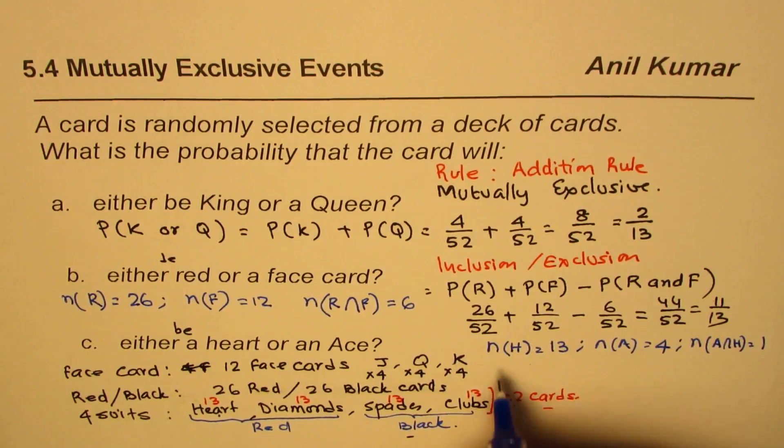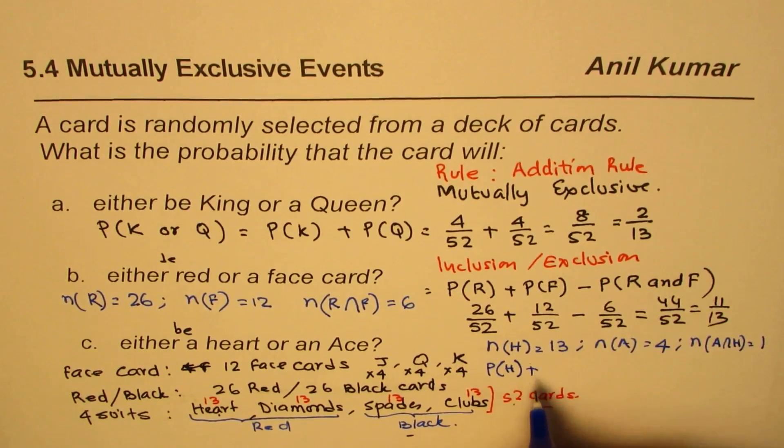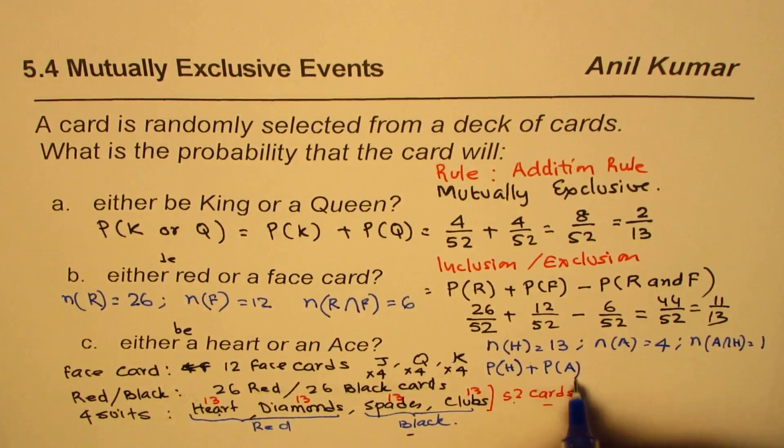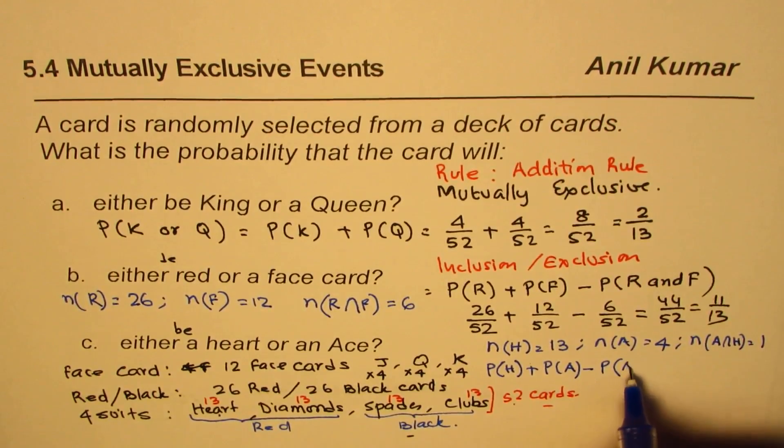In this case, as probability of getting hearts plus probability of getting ace, take away probability of ace intersection heart.